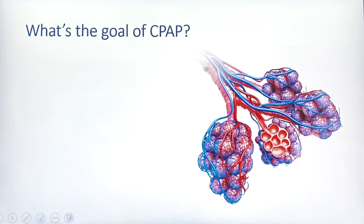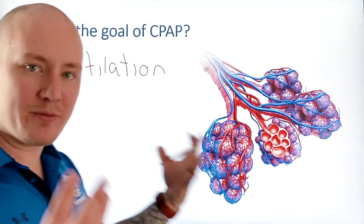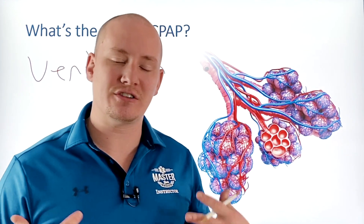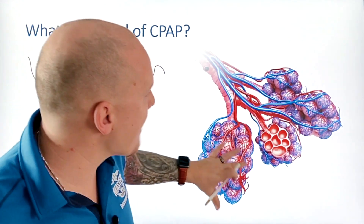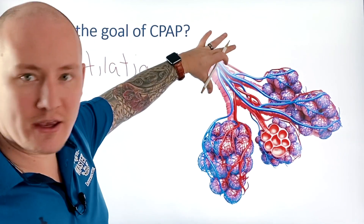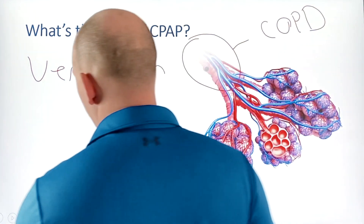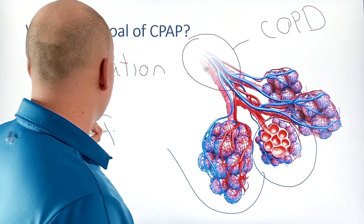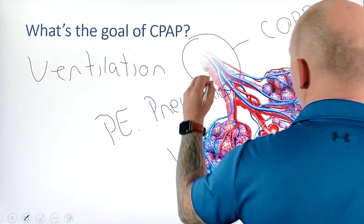First off we need to discuss what the whole purpose of CPAP is, and that is to improve ventilation. What we're trying to do with CPAP for patients that have COPD, pulmonary edema, or pneumonia with pulmonary edema and poor ventilation status — all those types of patients could have a problem with ventilation. COPD is going to affect the bronchioles, while pulmonary edemas and pneumonias are going to affect down here within the alveoli itself.